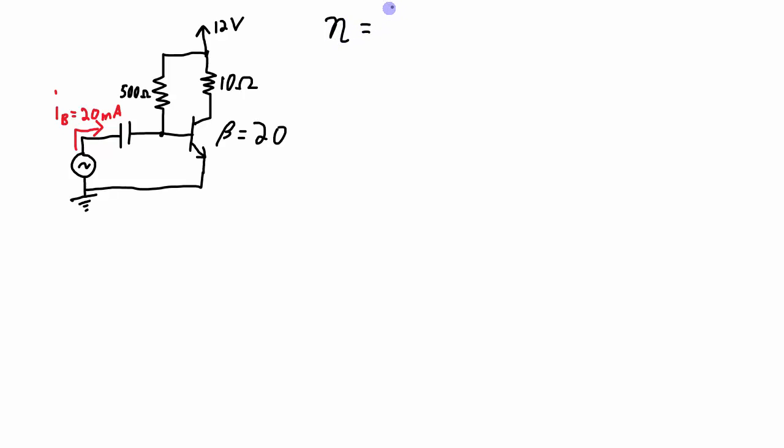Efficiency is going to be equal to the amount of power that is useful, so the amount of output power. In this case, that's going to be the power that's dissipated by this load resistor, divided by the power provided by the circuits. So that's what's provided by this 12 volt source, times 100%.